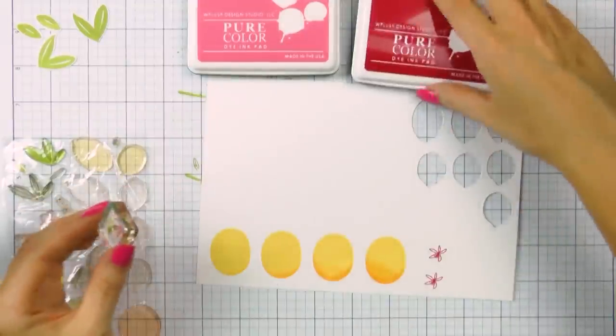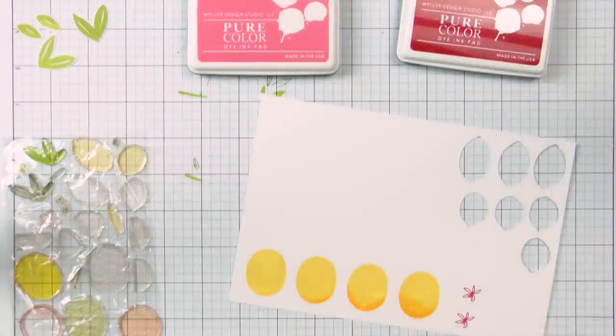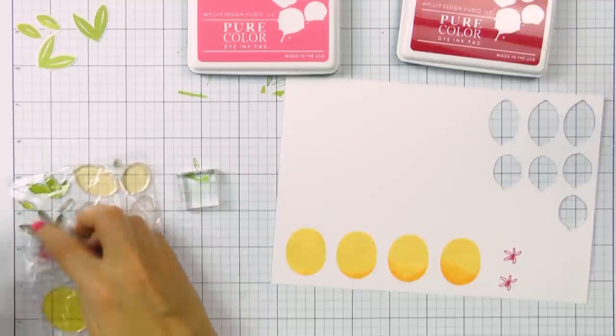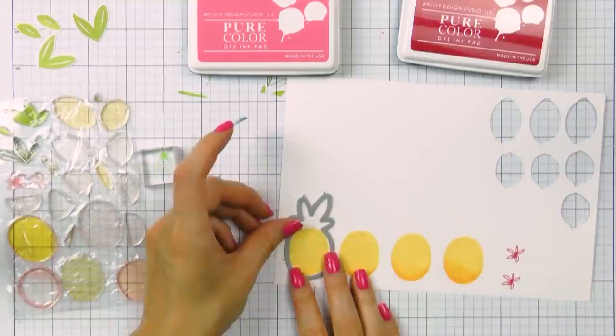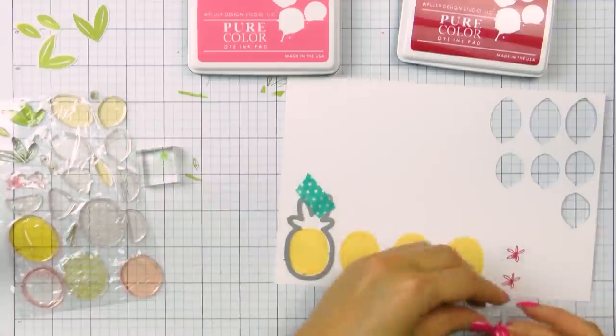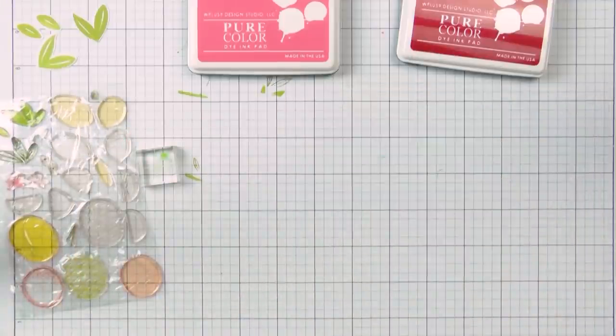I also stamped two flowers and I used WPlus9 Little Piggy and Sweet Gelato inks and next I used my dies and I cut the images out. So I have four pineapples and I have two flowers.